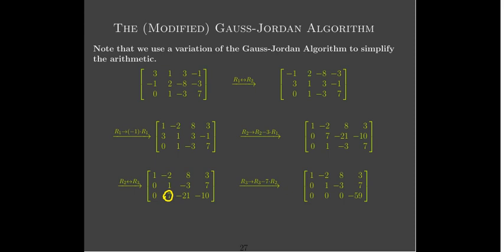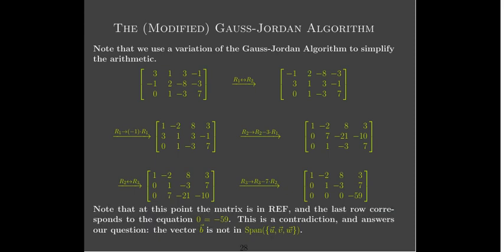When I do that, look what happens. Writing this as a system of equations: x1 minus 2x2 plus 8x3 equals 3; x2 minus 3x3 equals 7; and the last row says zero equals negative 59. That's false — that's what we call a contradiction, a false statement. So we can answer the question: is vector b in the span of u, v, and w? The answer is no. There is no solution, meaning no linear combination of those three vectors equals vector b.